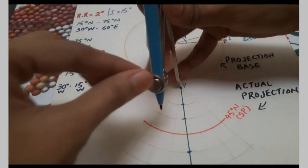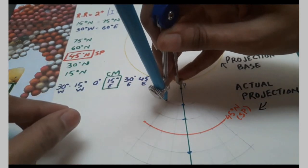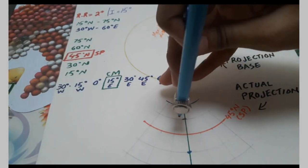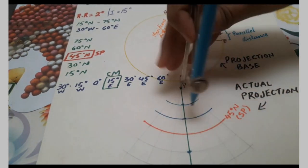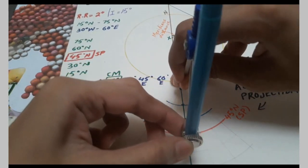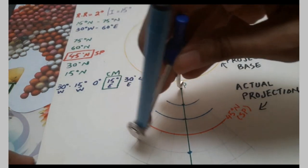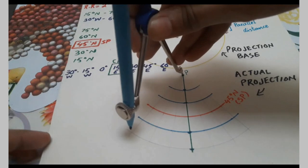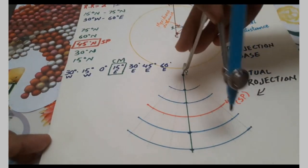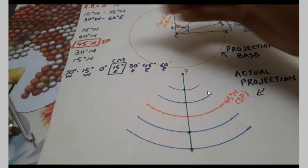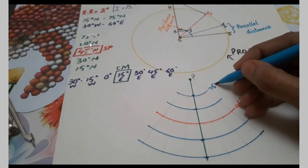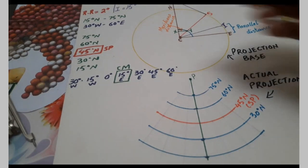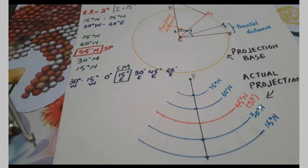Keeping the compass at point P, open an arc to the first marking on the central meridian and draw the arc — this is a parallel. Repeat for the second, third, and fourth markings. Remember to label these parallels according to the list from step two: 75°N and 60°N above the standard parallel, and 30°N and 15°N below it. All parallels in arc form are now complete.